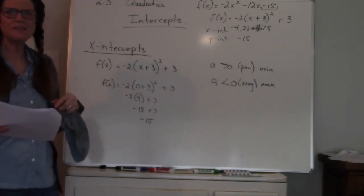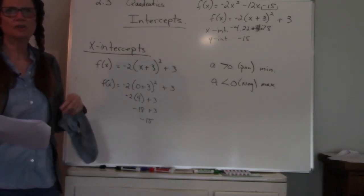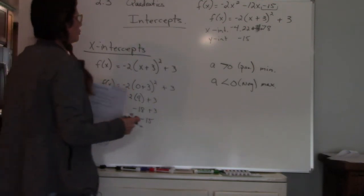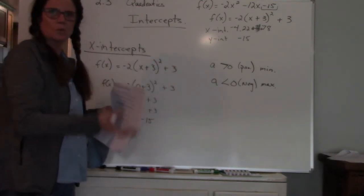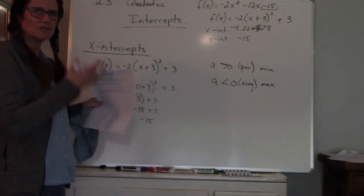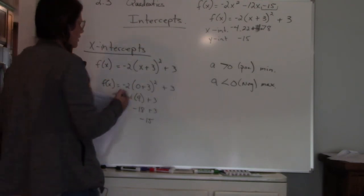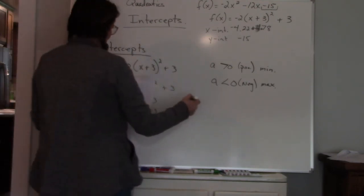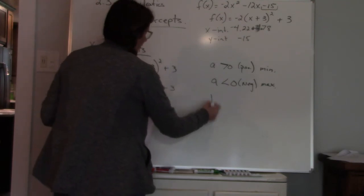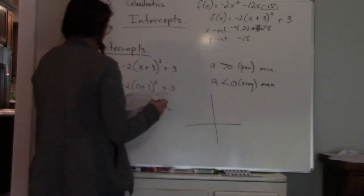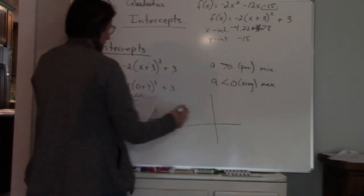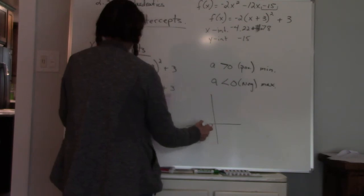And then the last thing is the range. The range is all based on your vertex. So remember the range is your y values. Domain is your x value. So we're looking for the y values. So for this particular function or quadratic, my parabola looks like this. I'm just going to show it to you.